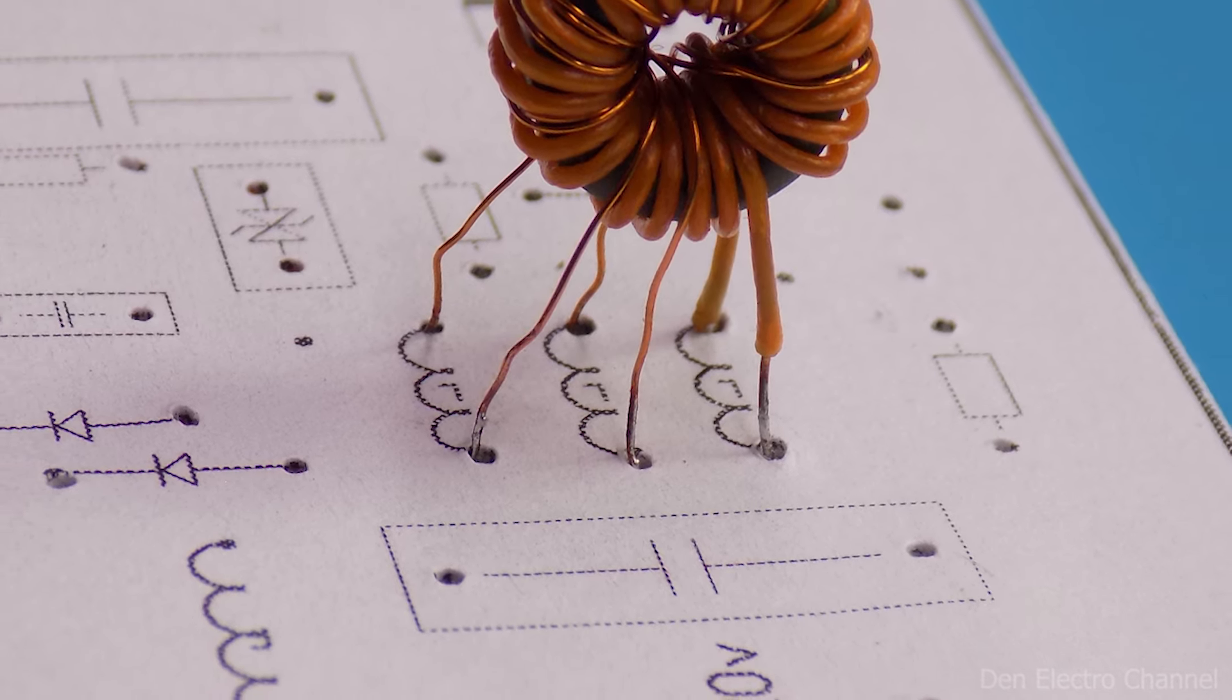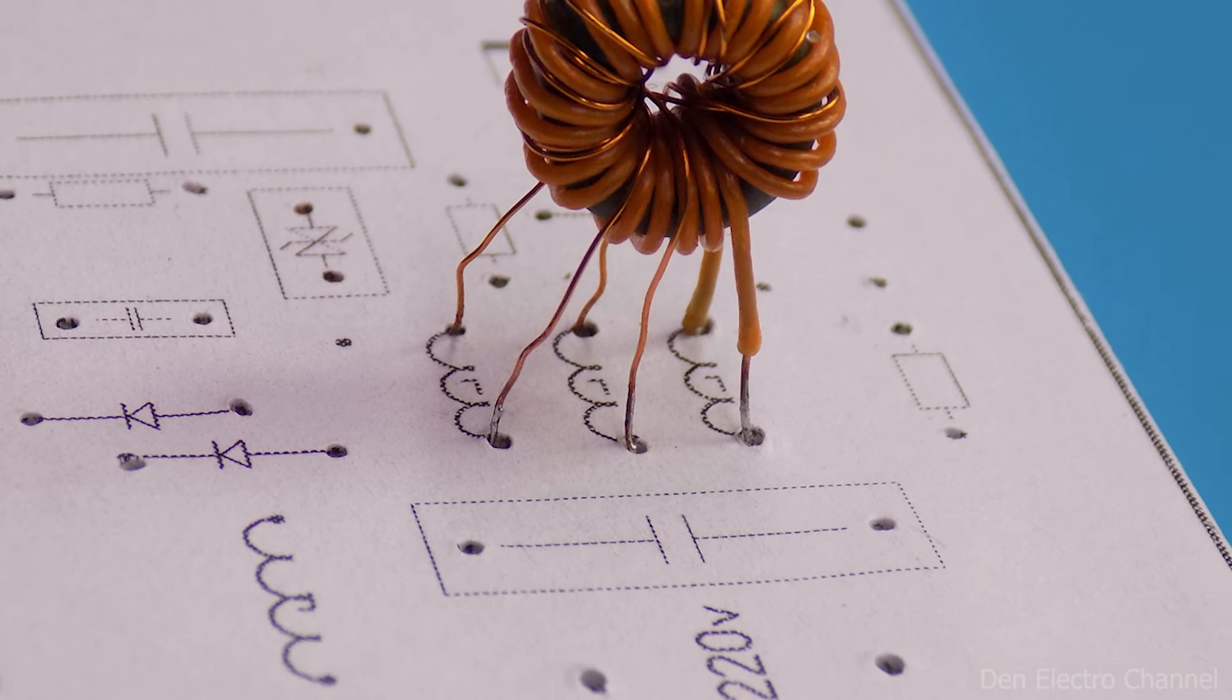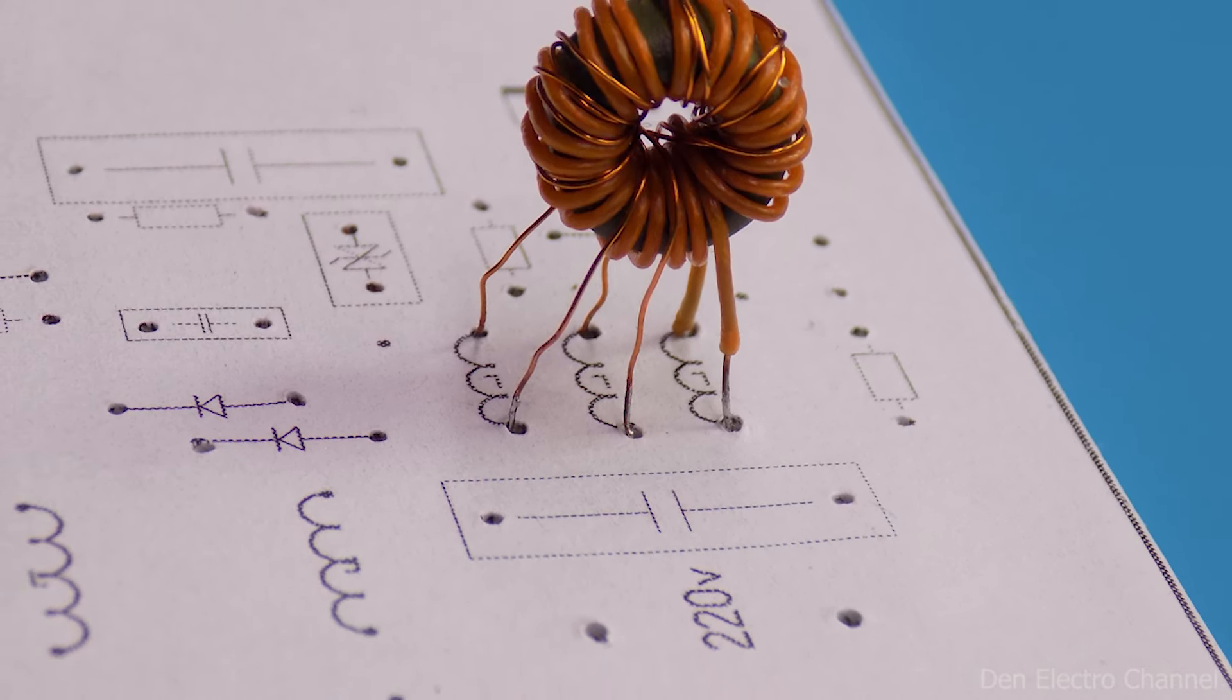The core is installed on the board like this. The secondary windings will be on the left and the primary on the right.